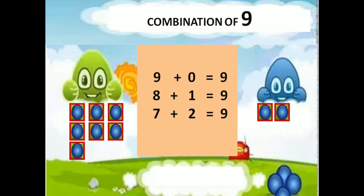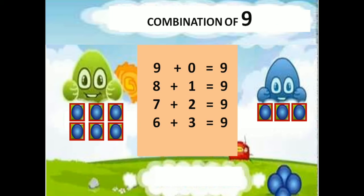Then, green doll having 7 balls, blue doll having 2 balls — 7 plus 2 equals 9. Green doll having 6 balls, blue doll having 3 balls — 6 plus 3 equals 9.